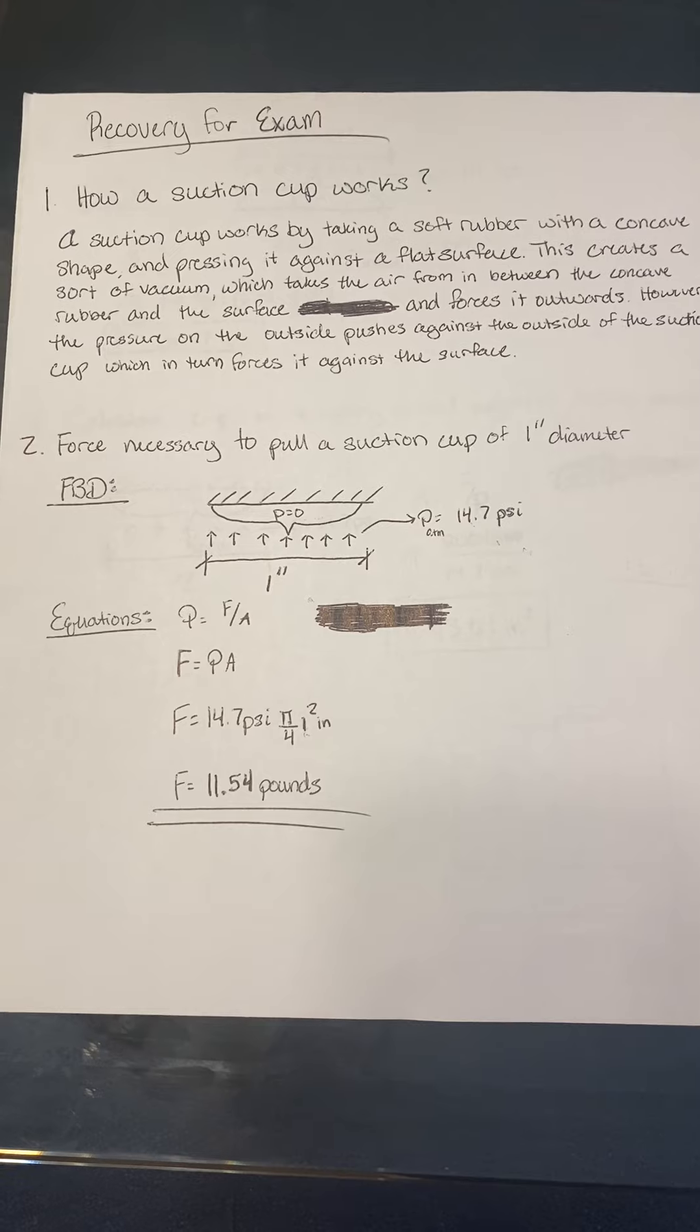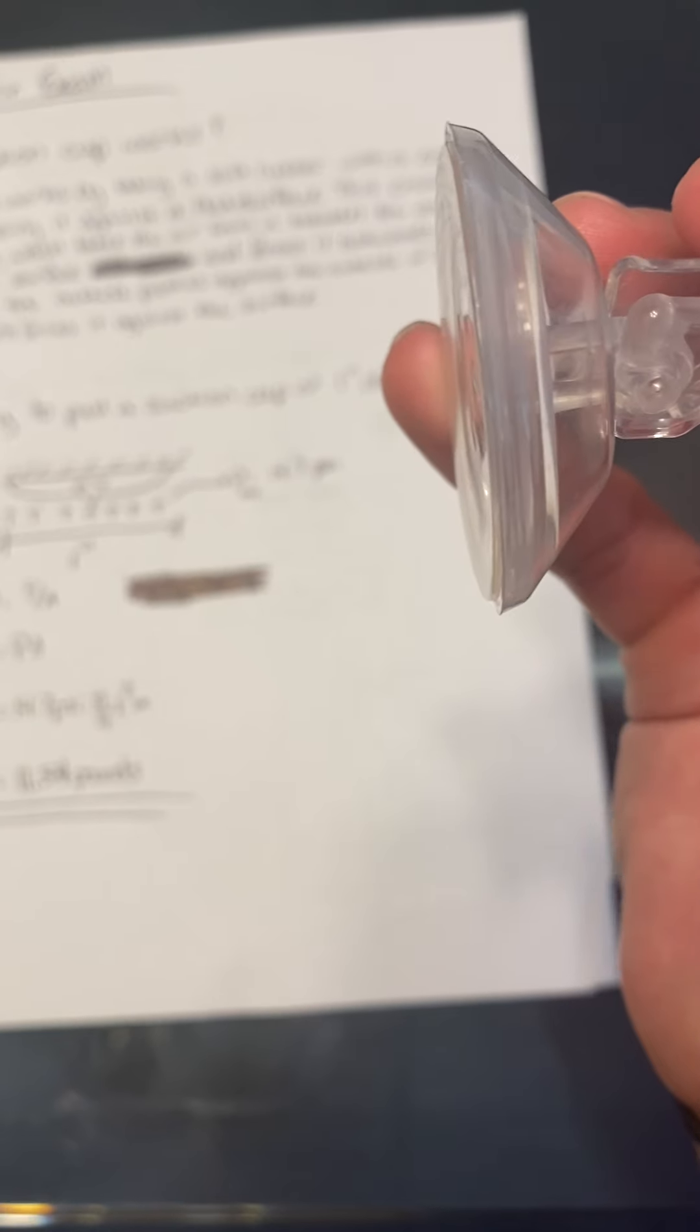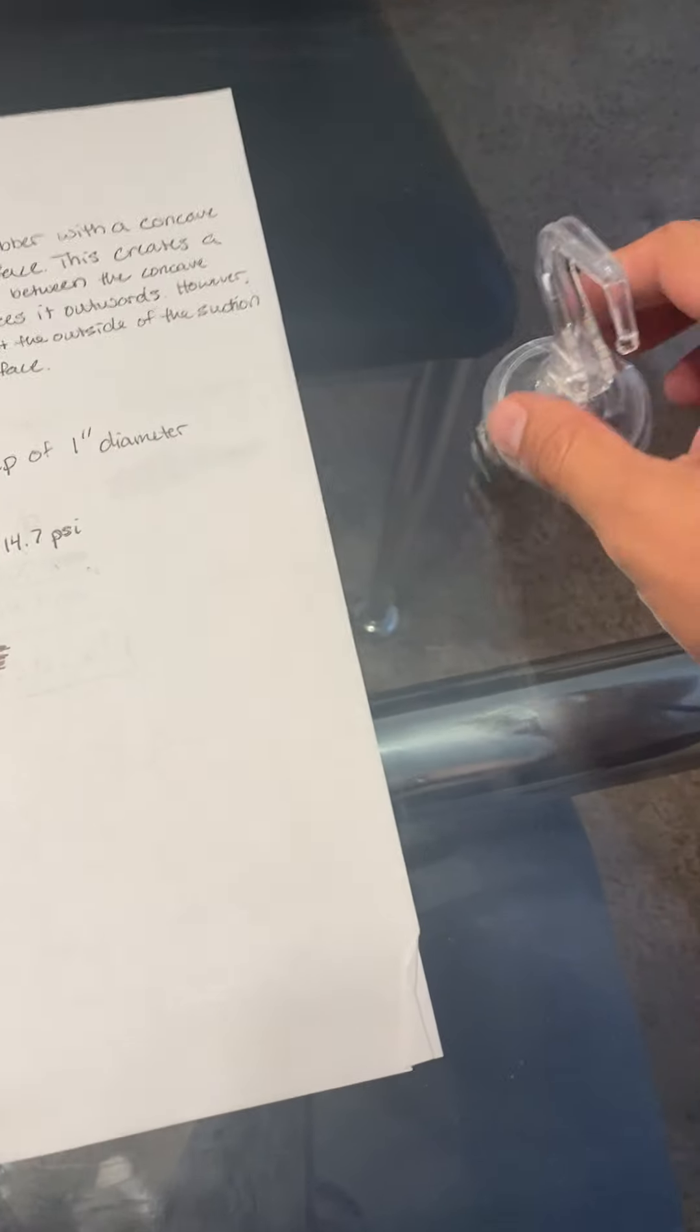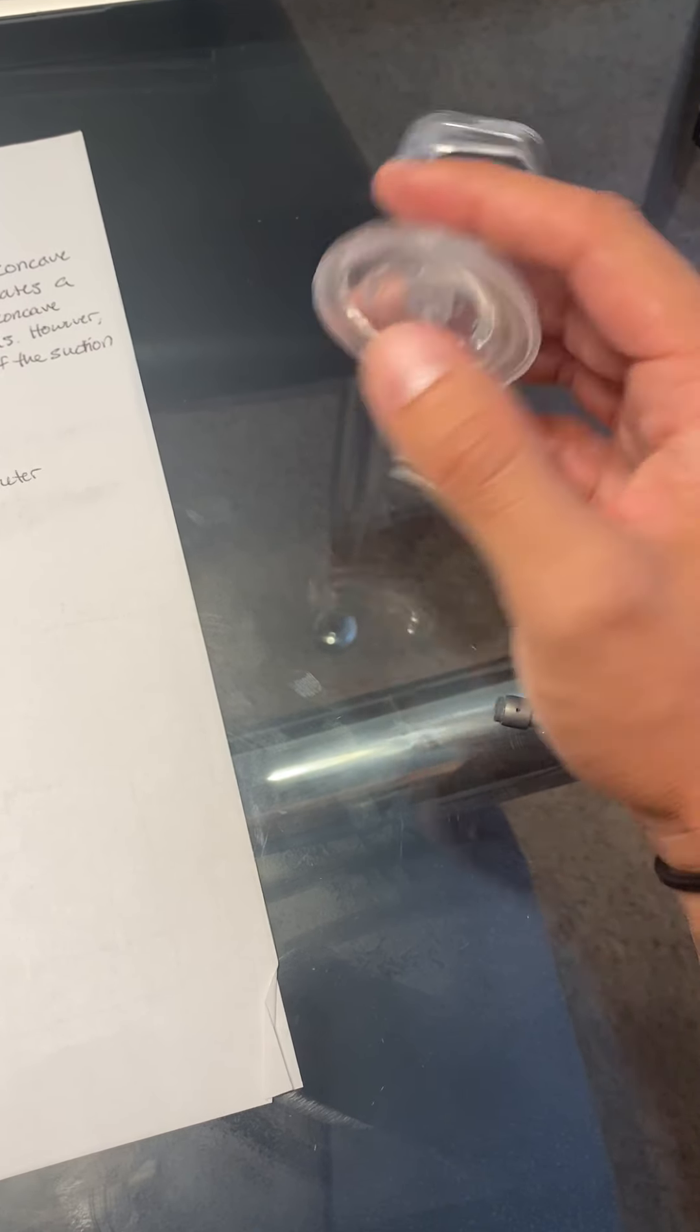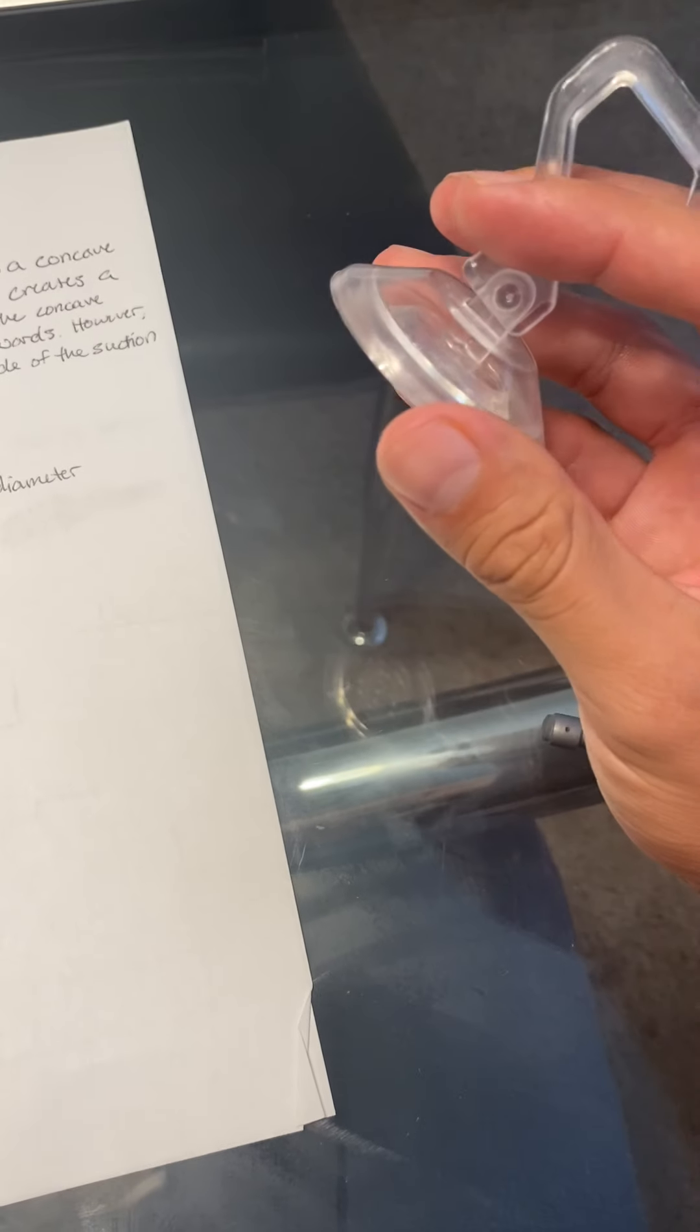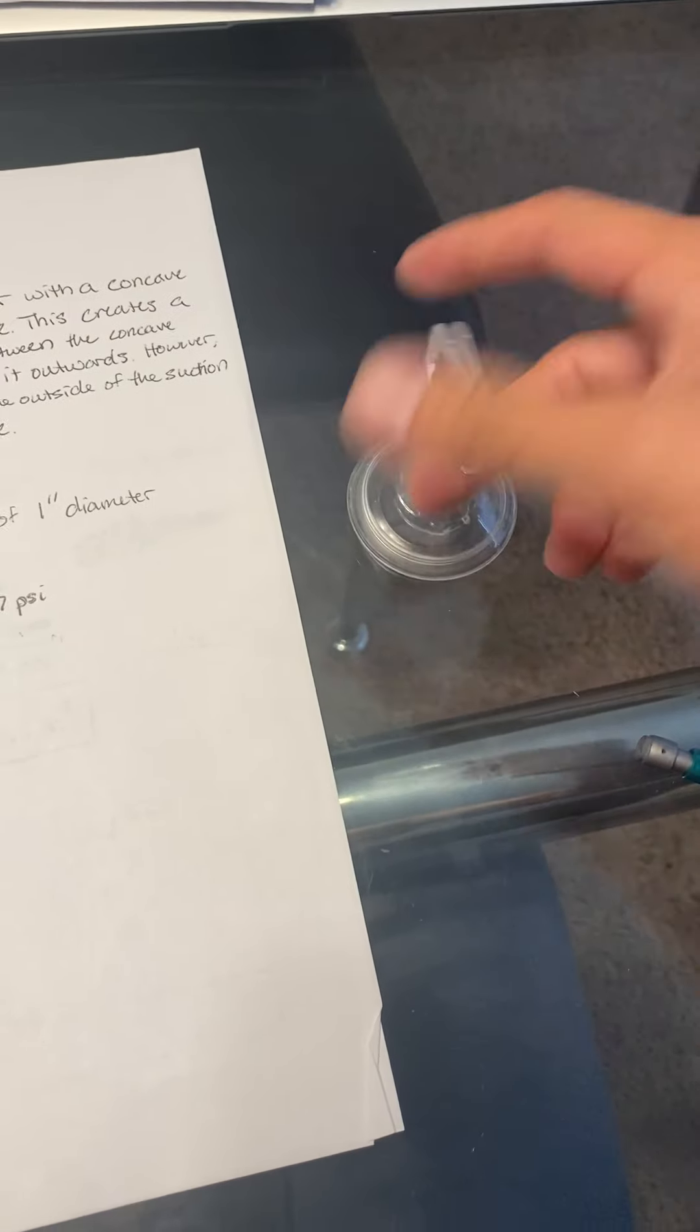This in turn forces it against the surface. So basically, I have my suction cup right here. It's got a concave surface right there. You can kind of see the concavity. So you press it against the surface and all the air in between this and the surface gets pushed outwards. The pressure in here is zero, so when you push it down this creates a vacuum.